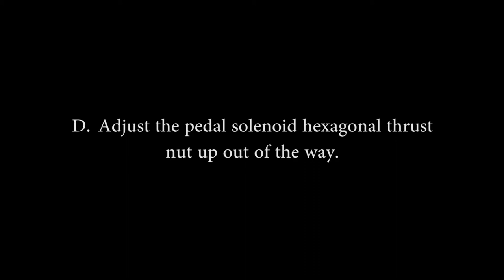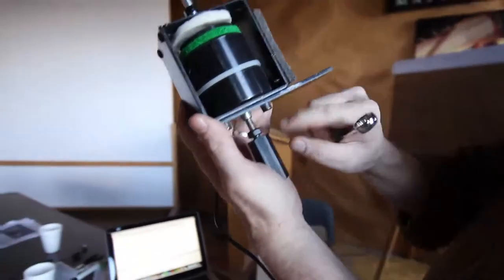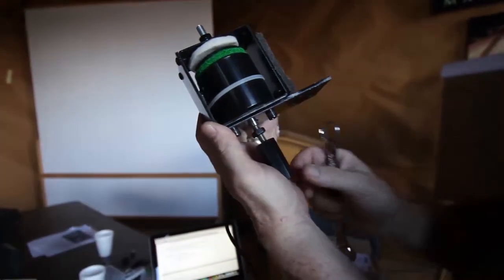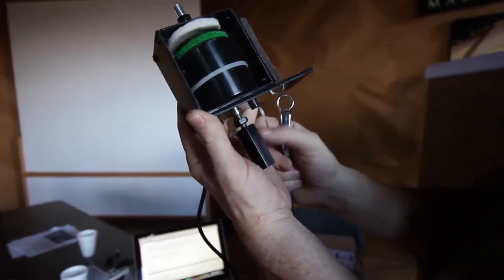Adjust the pedal solenoid hexagonal thrust nut up out of the way. Loosen the lock nut with the appropriate wrench. Turn the hexagonal tip up as far as it will go so it is out of the way.